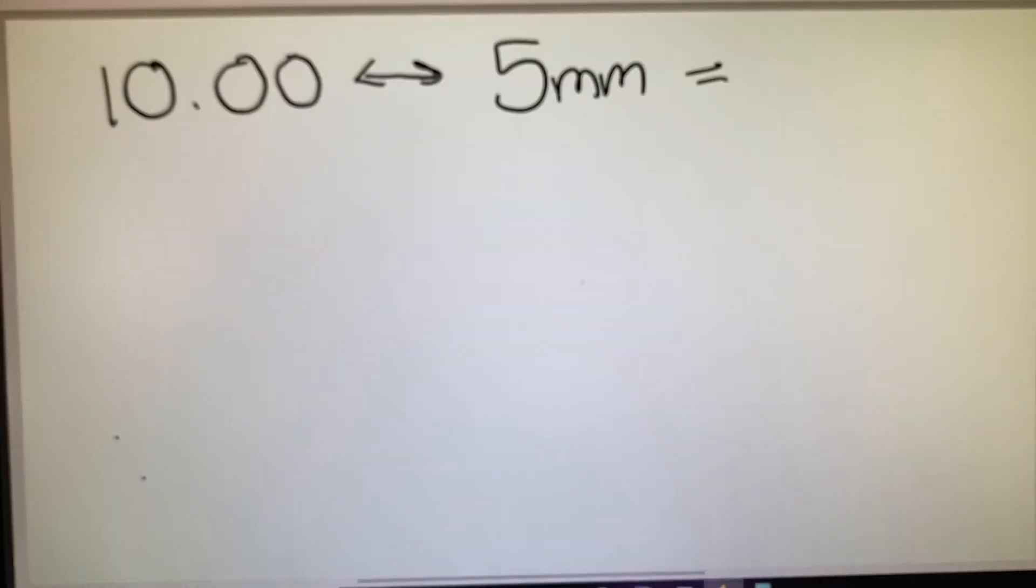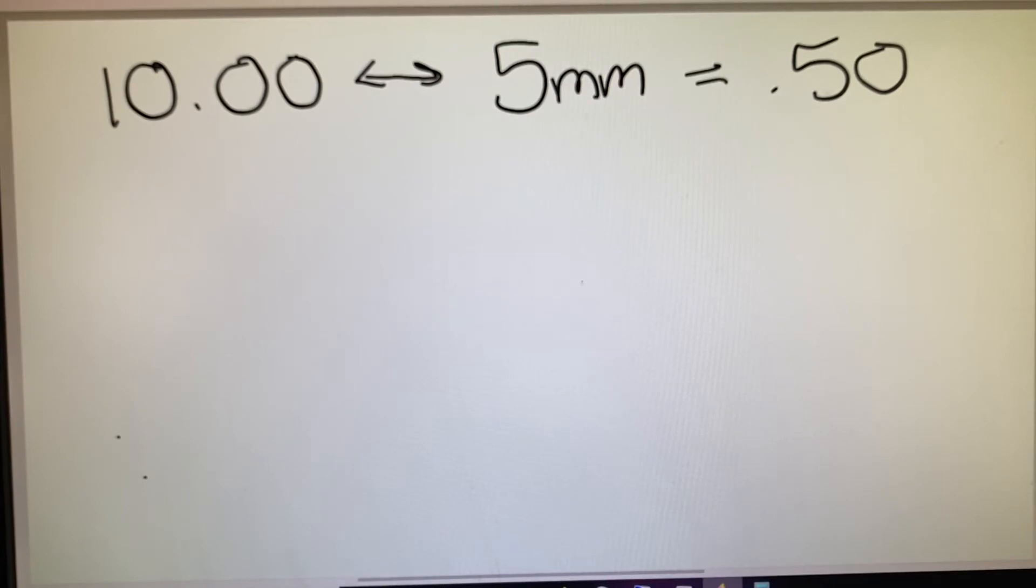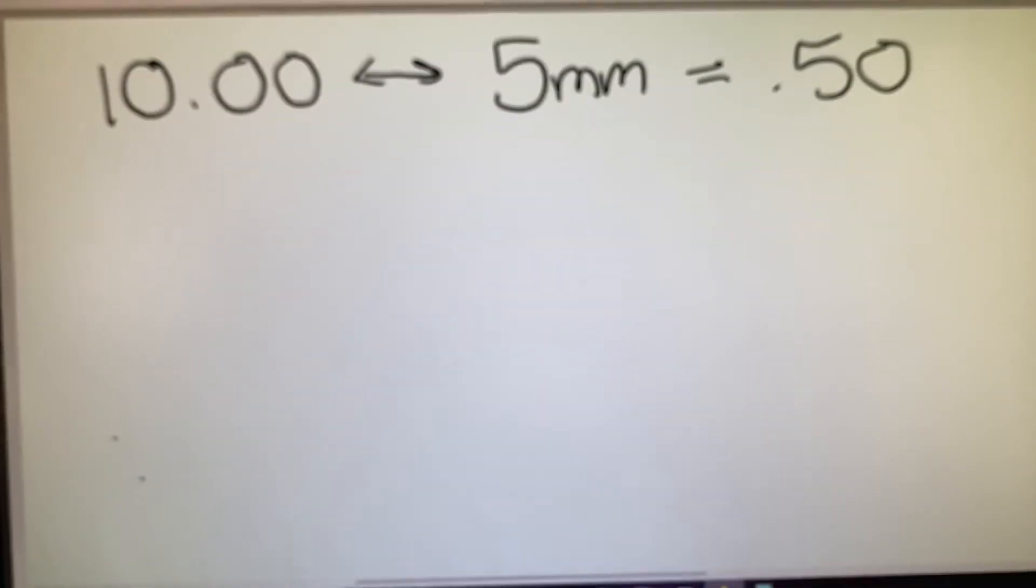And that movement would create a half of a diopter of change in the prescription. So a 10-diopter lens moved 5 millimeters changes the prescription by a half of a diopter. If ABO asks us a refractive vertex question, it usually is this rule.